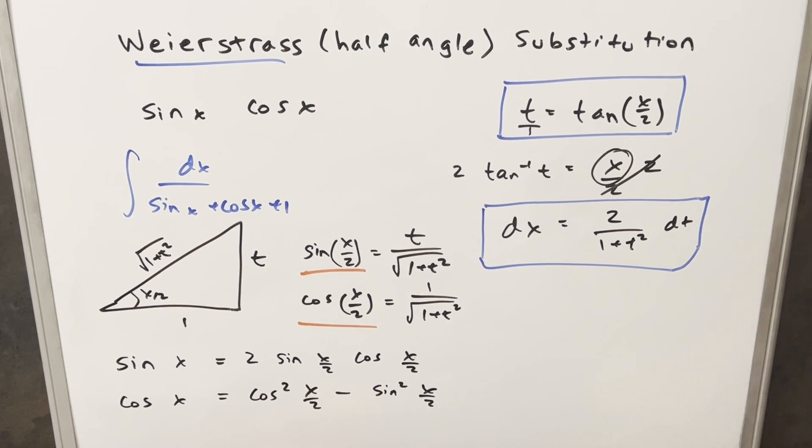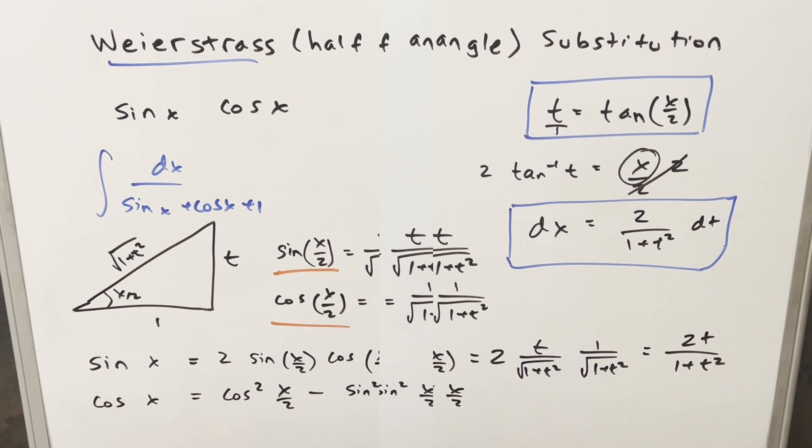So we want to get everything into t. So what I can do is just kind of plug in over here. So we have 2, our value of sine x over 2, that's just going to be this. I'll write in t over square root of 1 plus t squared. And then for cosine x over 2, that's just going to be 1 over square root of 1 plus t squared. So then just multiplying all this together, we get our value for sine x, which is going to be 2t over 1 plus t squared.